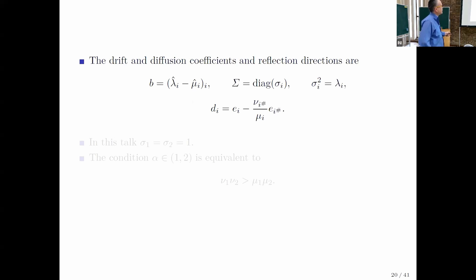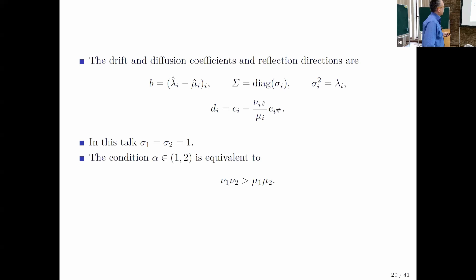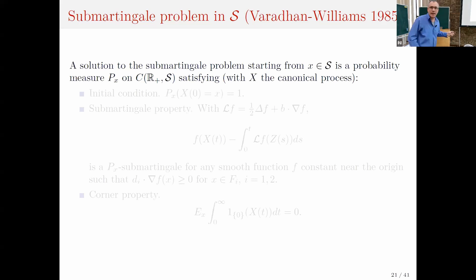You can compute the drifts, the diffusion coefficient, and the direction of constraint. I'm going to assume for simplicity in this talk that the sigmas are equal to 1. The condition alpha between 1 and 2 that I am interested in is equivalent in terms of the problem data to nu_1 * nu_2 greater than mu_1 * mu_2. This is the assumption.